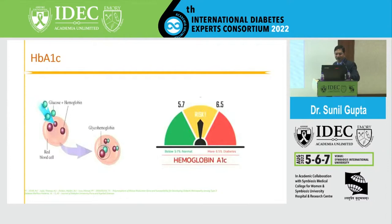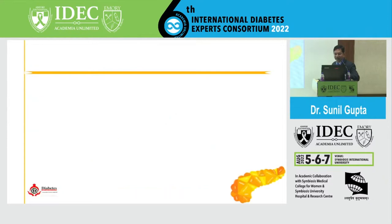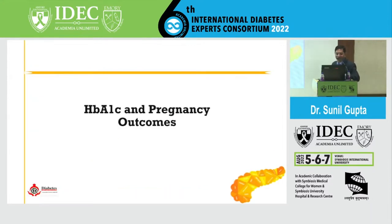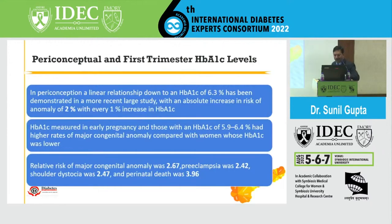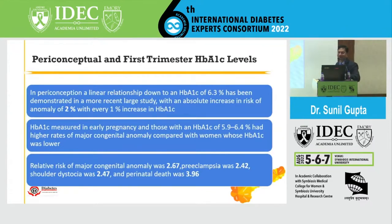Less than 5.7% is acceptable, 5.7 to 6.5 is prediabetes, and more than 6.5 is not acceptable. Regarding HbA1c and pregnancy outcomes, in peri-conception a linear relationship has been demonstrated with a threshold of 6.3%, shown in more recent large studies, with an absolute increase in the risk of anomaly of around 2% with every 1% increase in HbA1c.